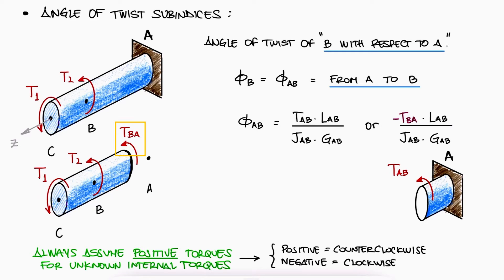If we solve for TBA, which is from B to A, meaning we begin at C and perform a cut between B and A, we find that TBA is equal to minus T1 and T2 added together.